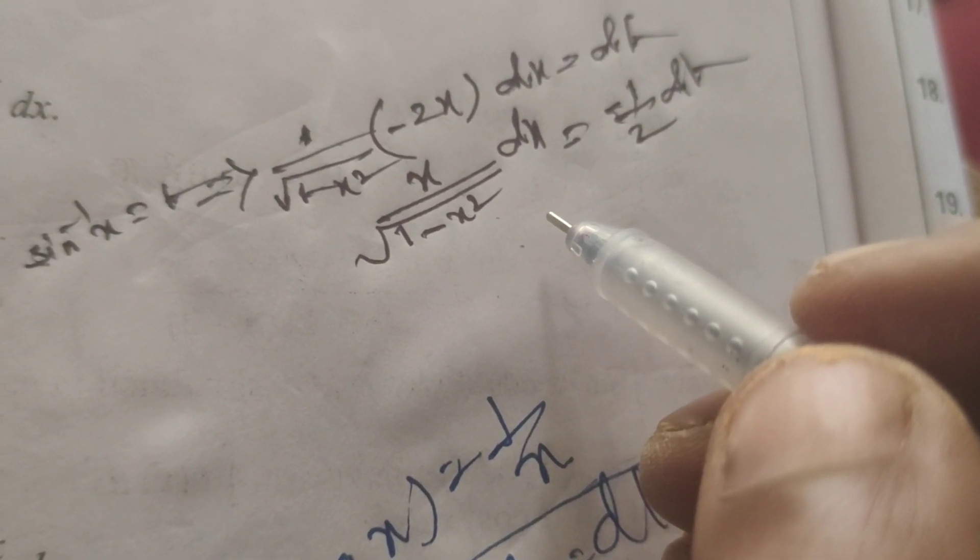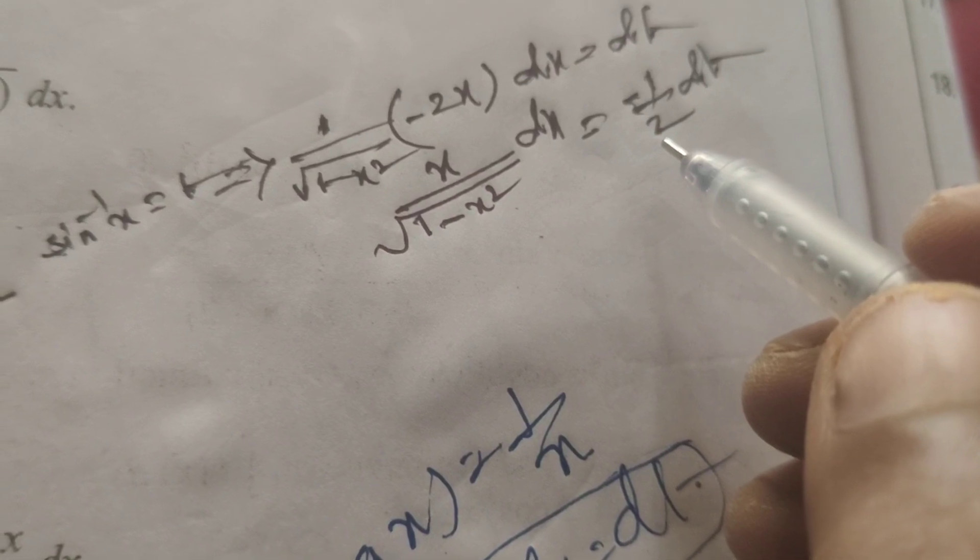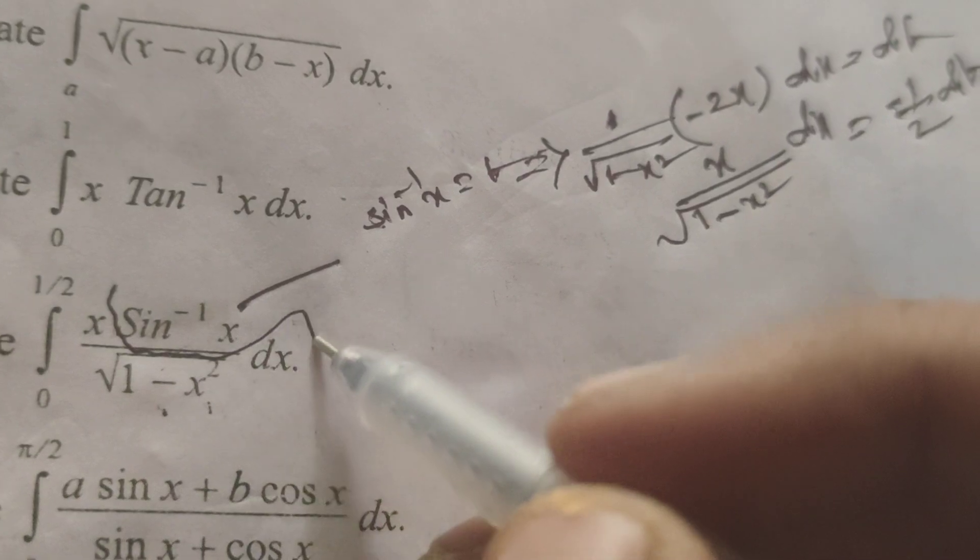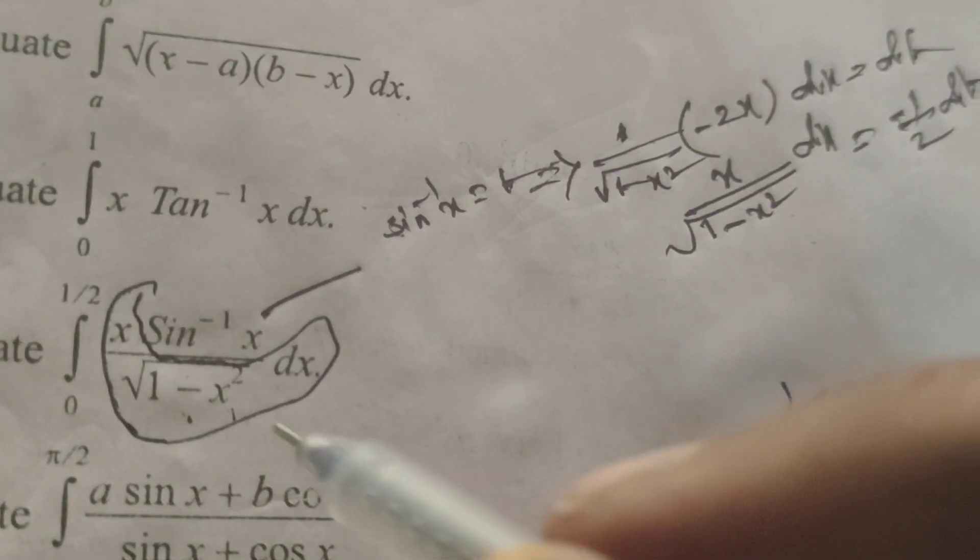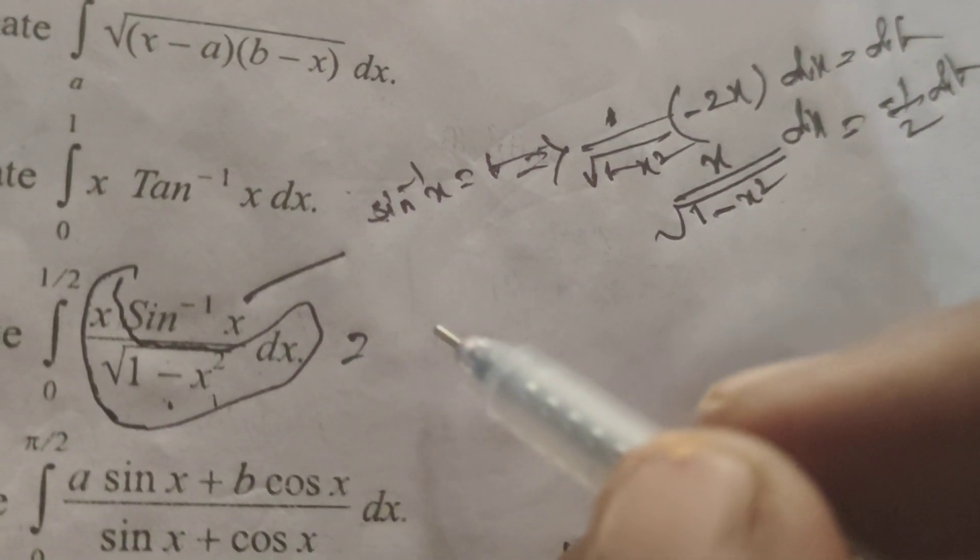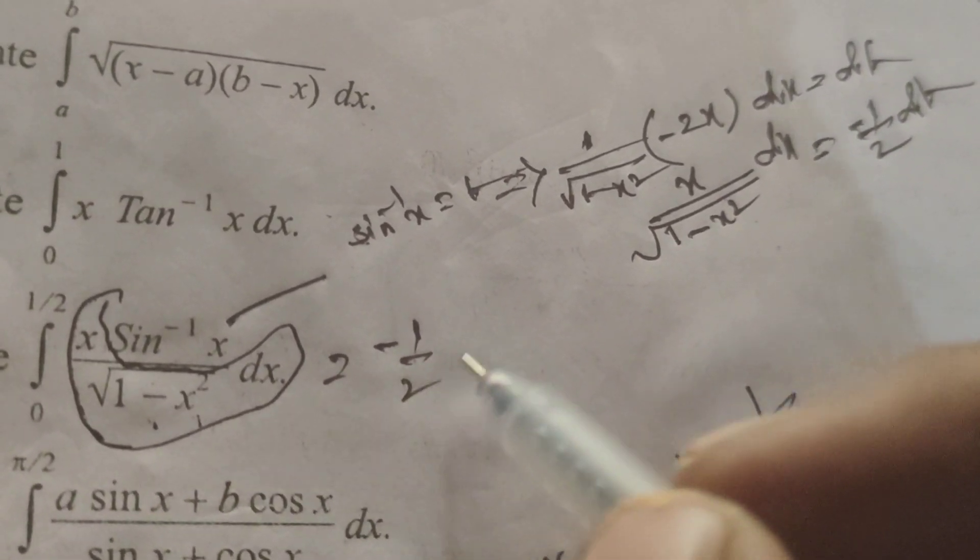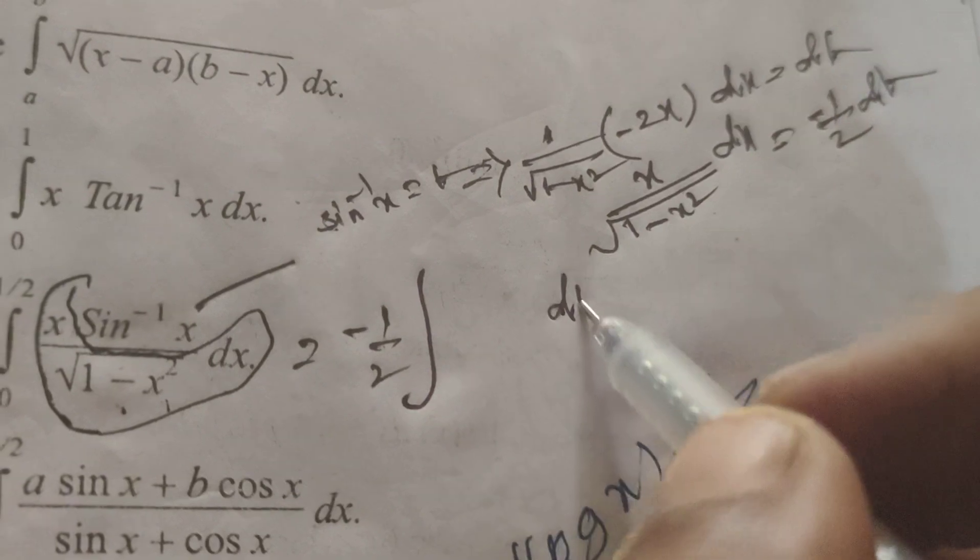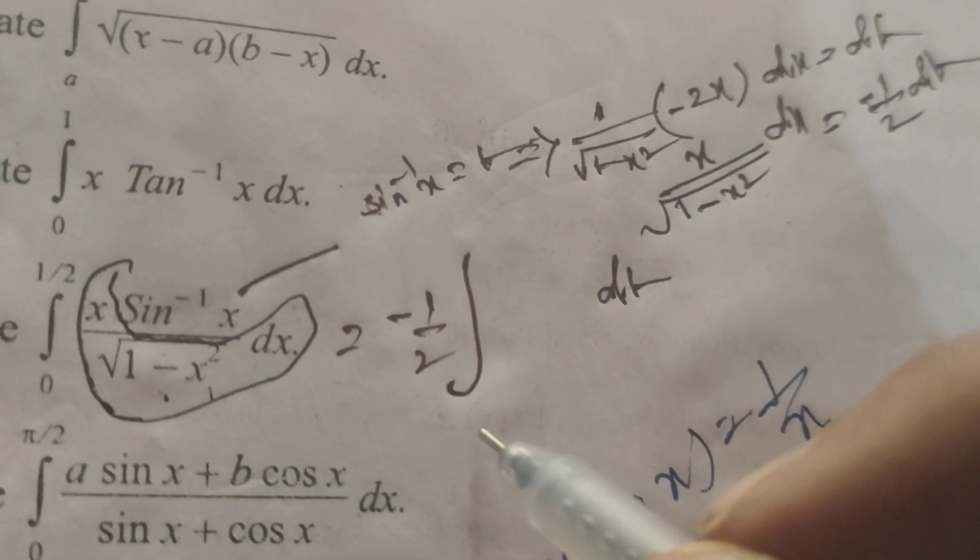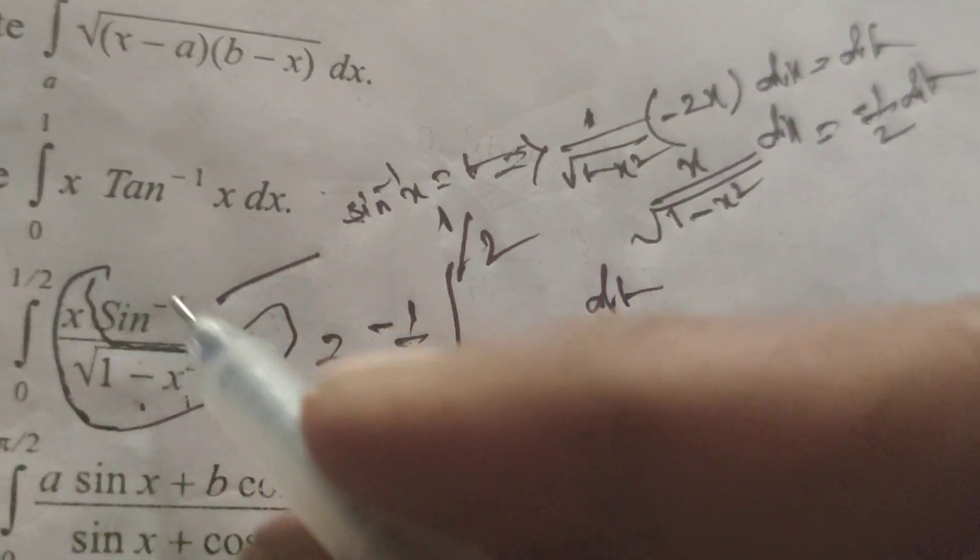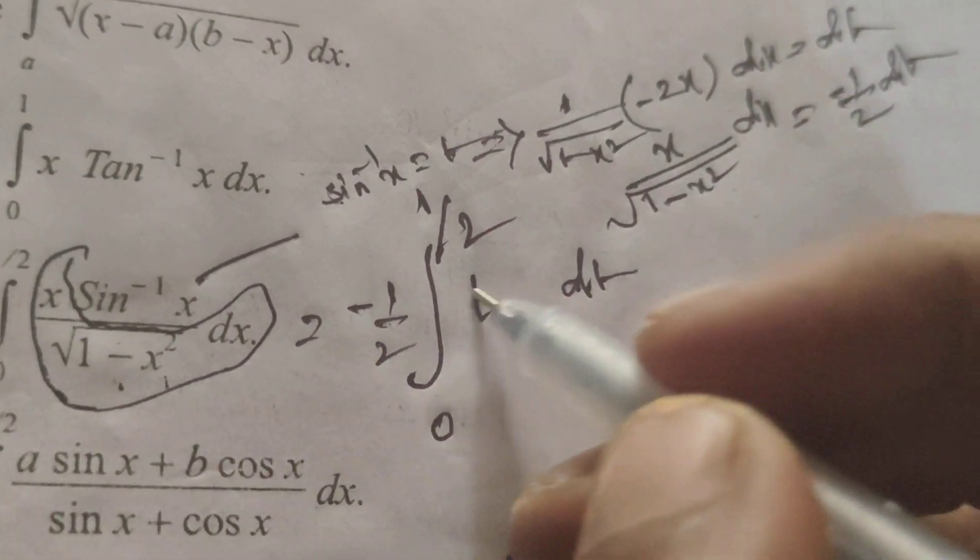Now, in place of x by root of 1 minus x square dx, substitute minus 1 by 2 dt. The limits remain as 0 to 1/2, and in place of sin inverse x, we have t.